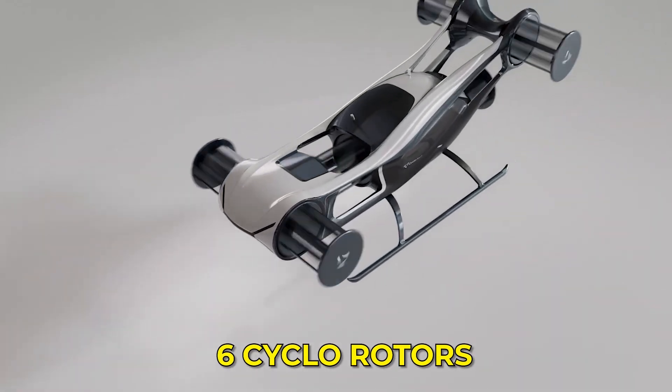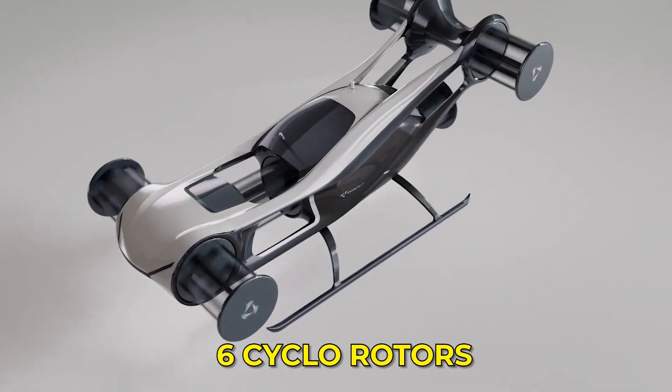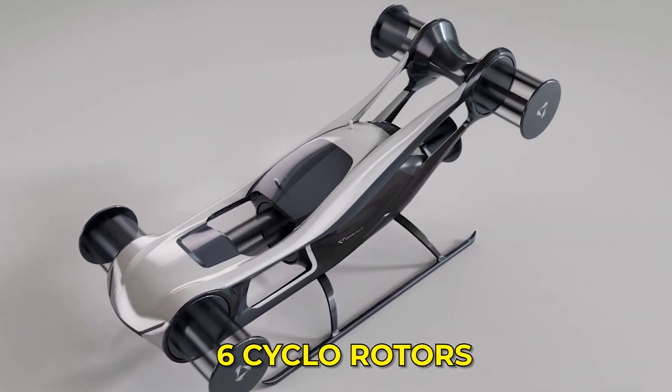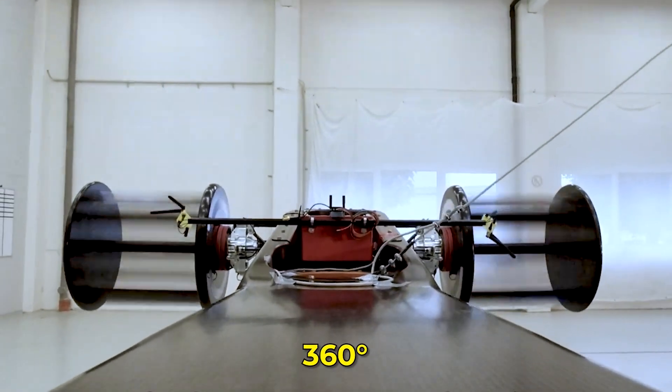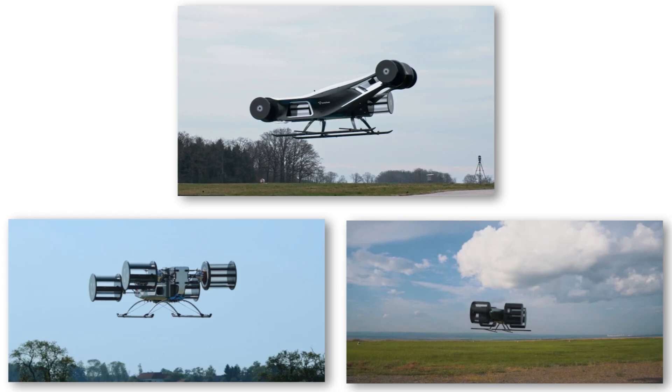The Blackbird uses six cyclorotors, four mounted at the corners and two near the center, allowing for full 360-degree thrust vectoring.